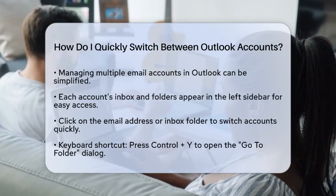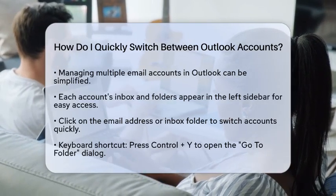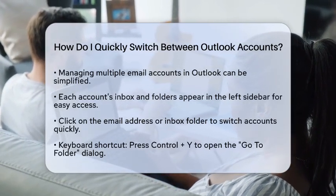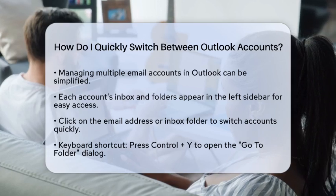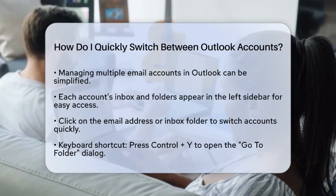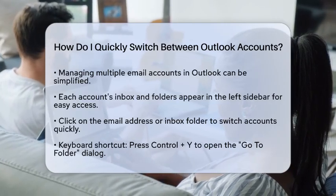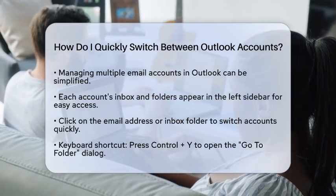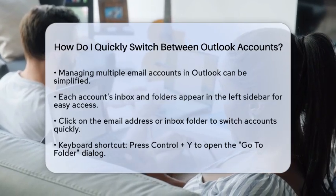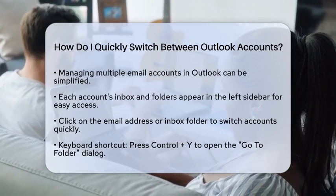When you add multiple email accounts to Outlook, each account's inbox and folders will show up in the sidebar on the left side of the window. To switch between accounts, just click on the email address or the inbox folder of the account you want to access. This layout allows you to see all your accounts at a glance, making it simple to jump from one to another.